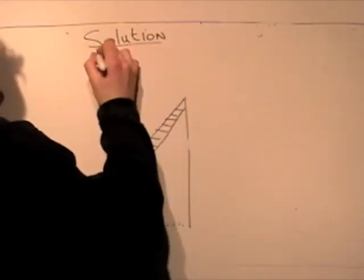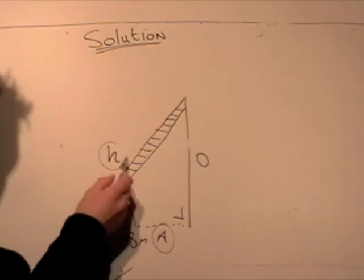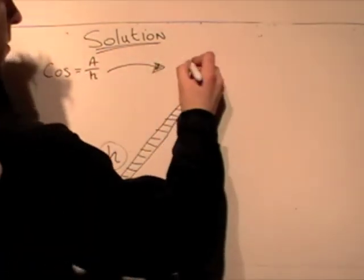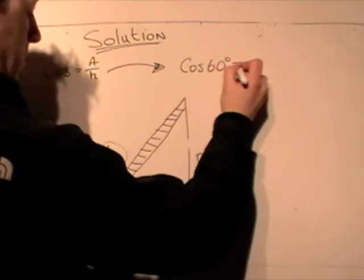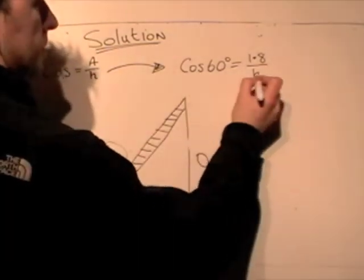All right, here's how we did it, and it's slightly different to the way we've done the last question because we were looking for something different. We know the hypotenuse and we know the adjacent, which means we're dealing with cosine a and h. Cosine 60 equals 1.8 over h.